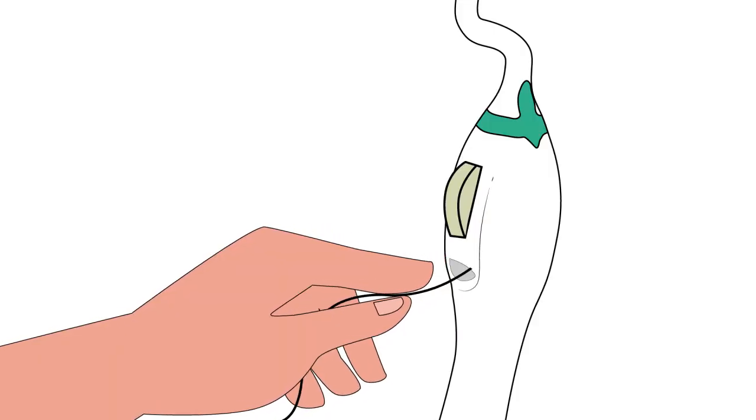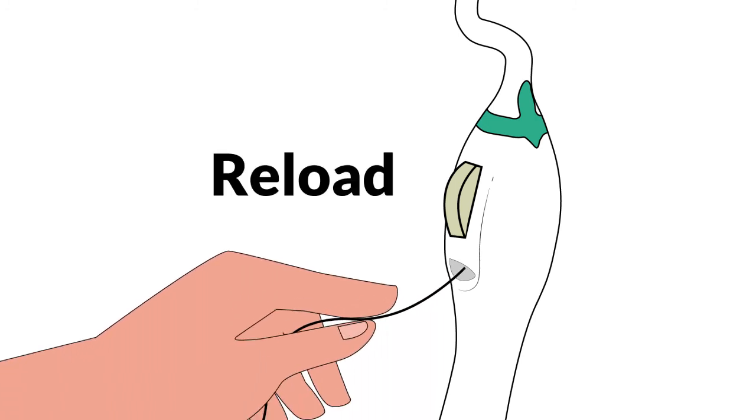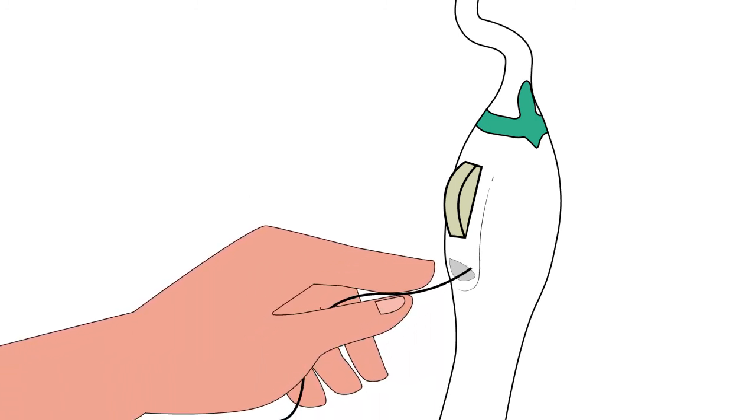Once the dental space is fully clean, pull the AutoFlosser floss out of the space, reload the AutoFlosser and proceed to clean any remaining spaces.